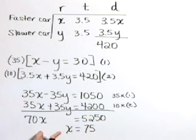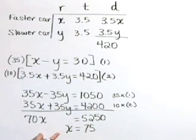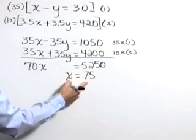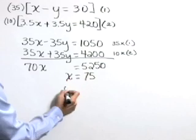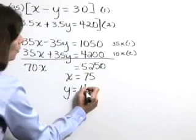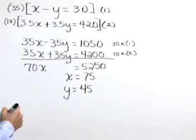Now x represents the speed of the faster car. y is the speed of the slower car, and we're given that that rate is 30 miles per hour less than the 75. So y is 75 minus that 30, or 45 miles per hour.